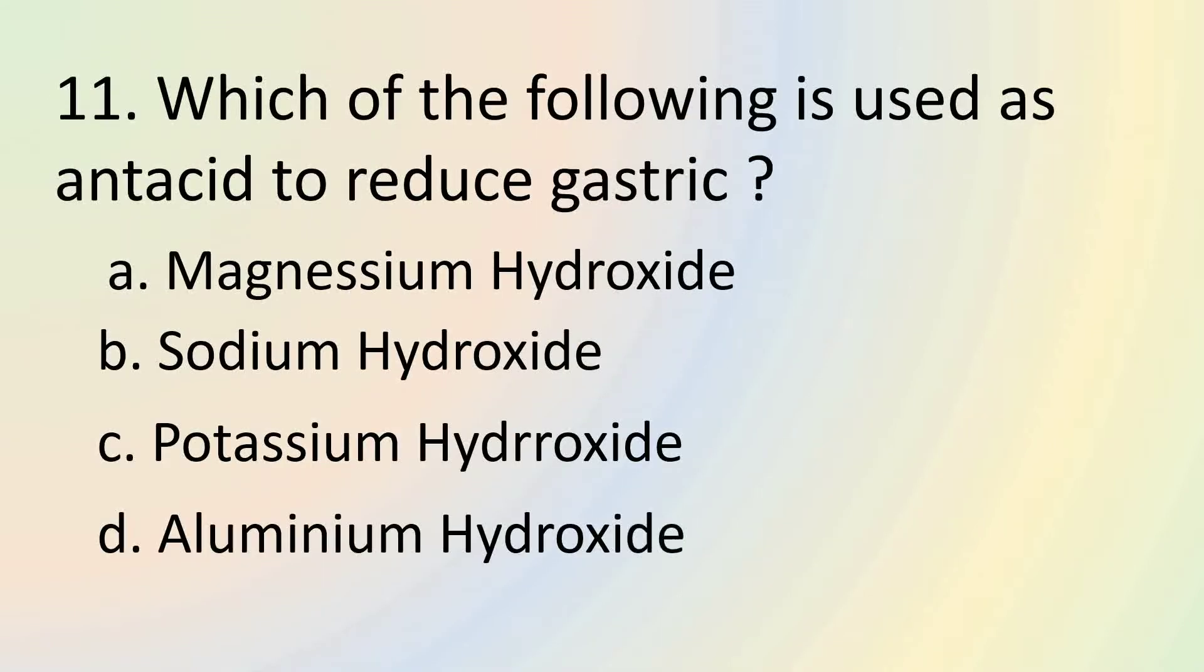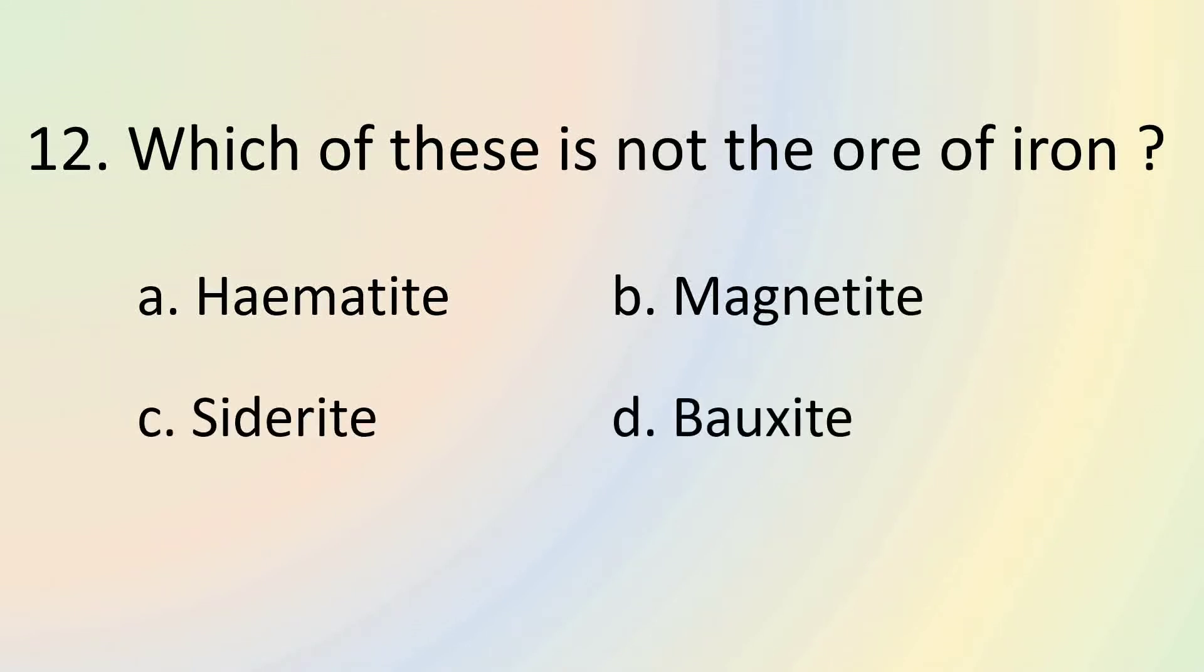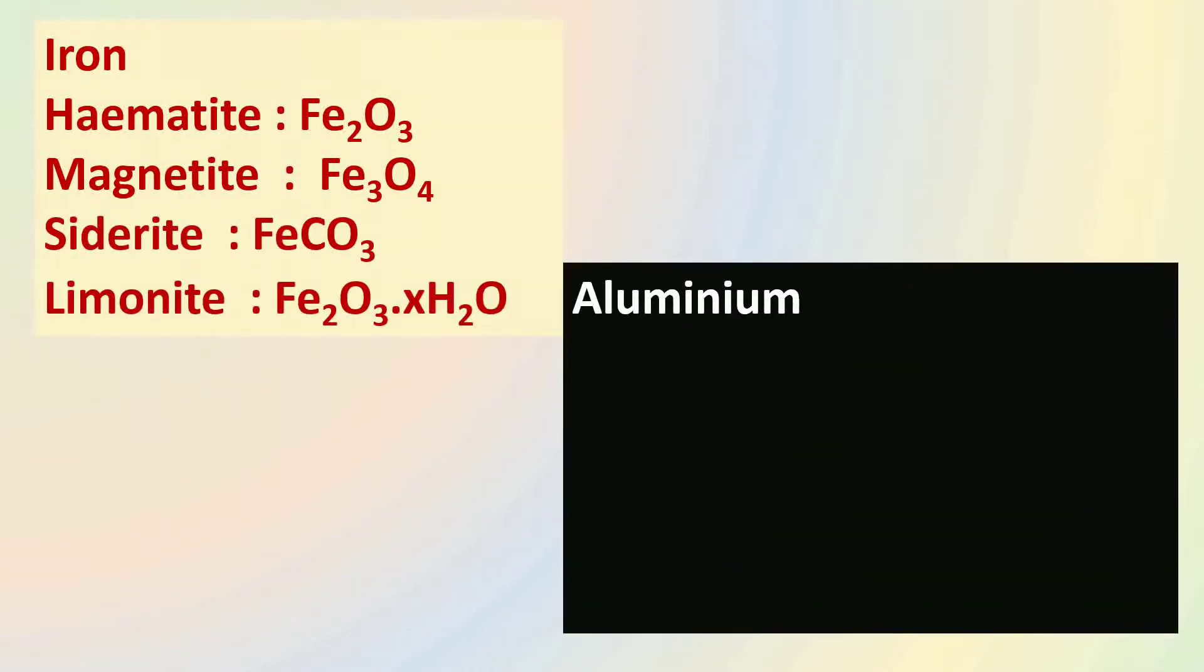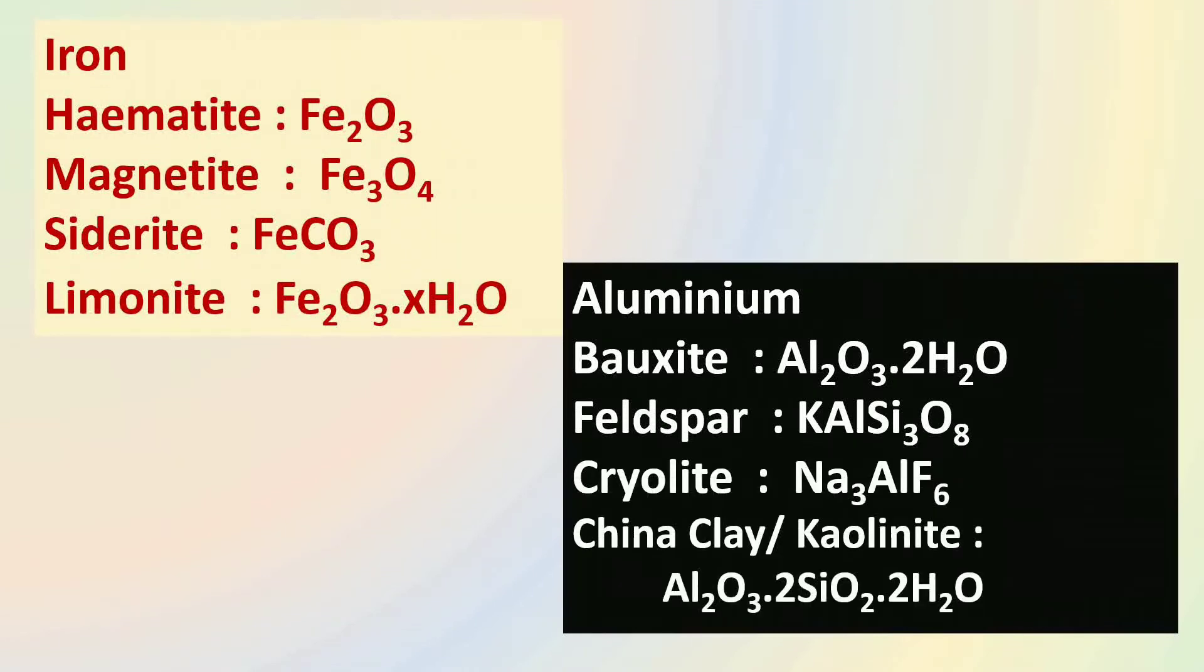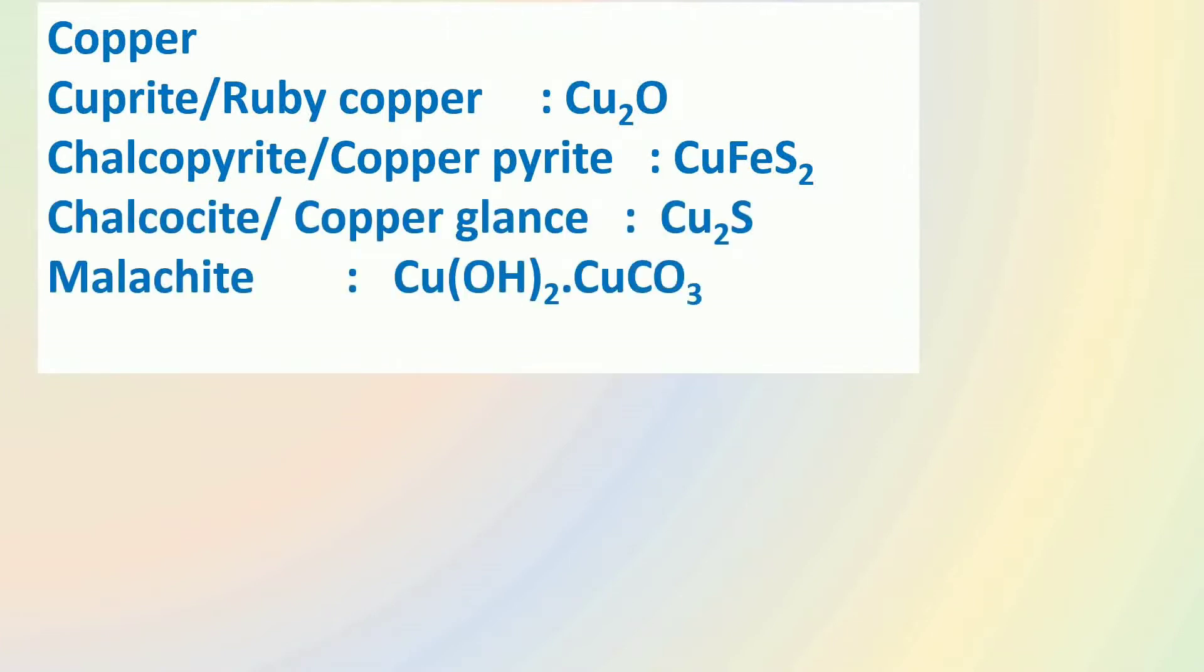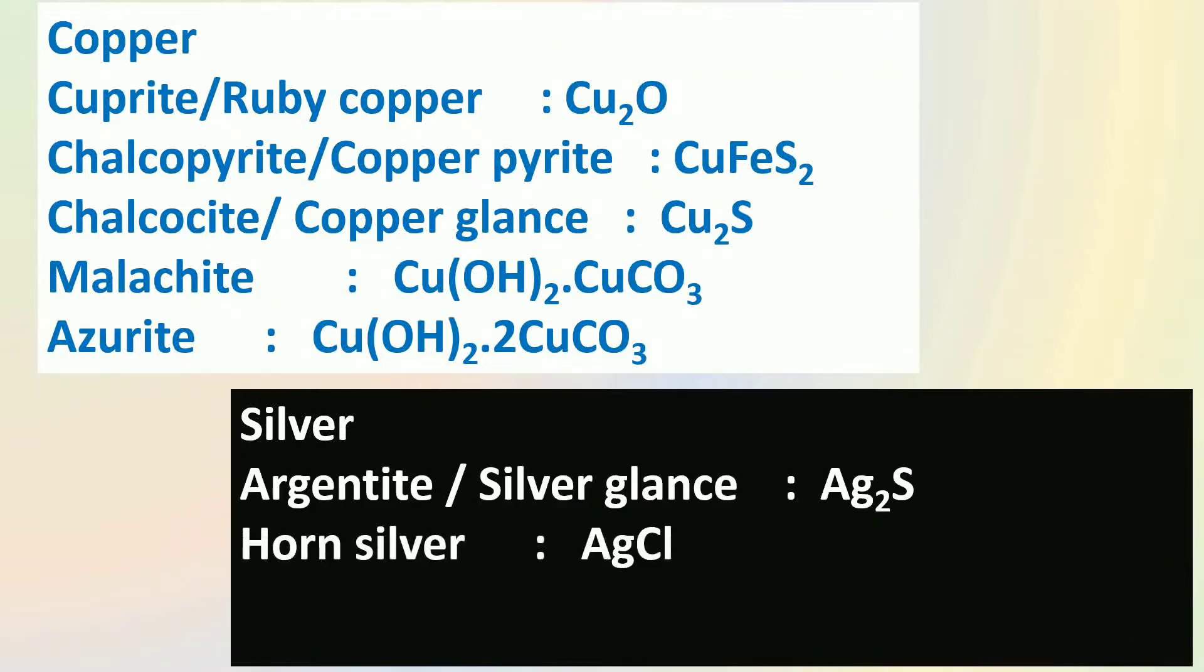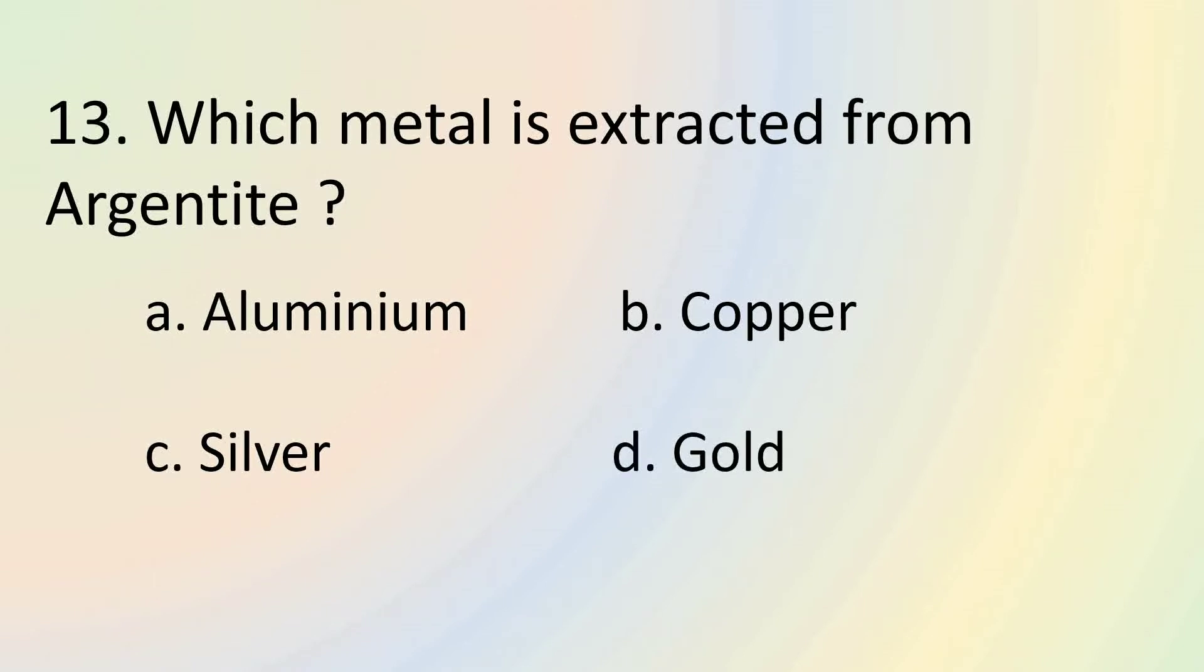Magnesium hydroxide is used as antacid to reduce gastric acidity. Among the given options, bauxite is not the ore of iron. The ore of iron include hematite, magnetite, siderite, and limonite. The ores of aluminum include bauxite, feldspar, cryolite, and china clay. The ores of copper include cuprite, chalcopyrite, chalcocite, malachite, and azurite. The ores of silver include argentite, horn silver, and pyrargyrite. So the metal extracted from argentite is silver.